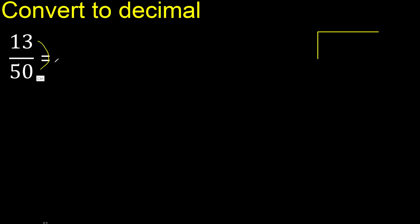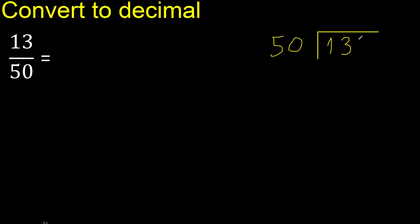13 divided by 50. 13 is less, therefore complete — always complete with 0.